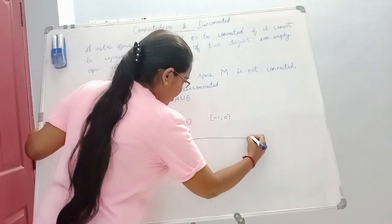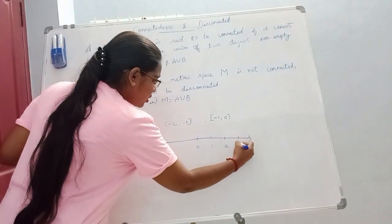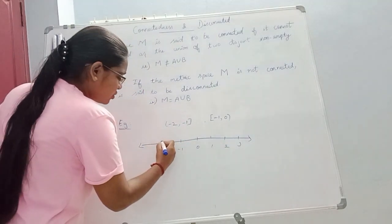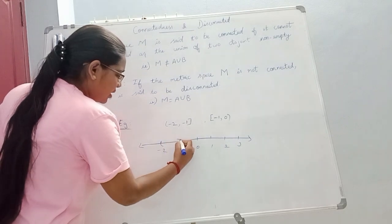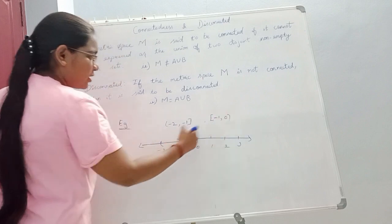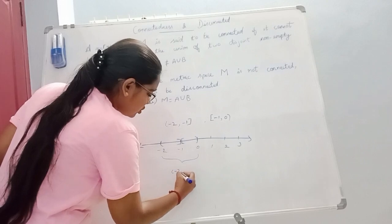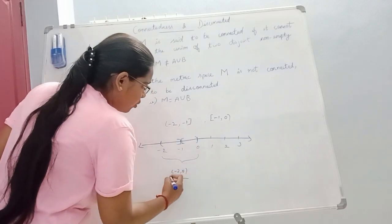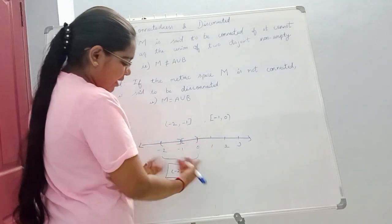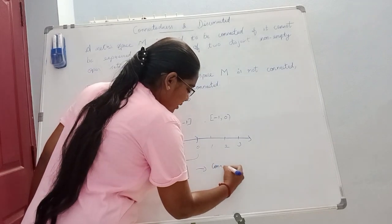On the real line, we have points 0, 1, 2, 3, and minus 1, minus 2. The whole part from minus 2 to 0 is covered in an open interval. So we have two sets here, covering the interval from minus 2 to 0 as an open interval.